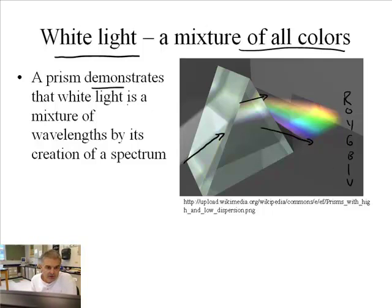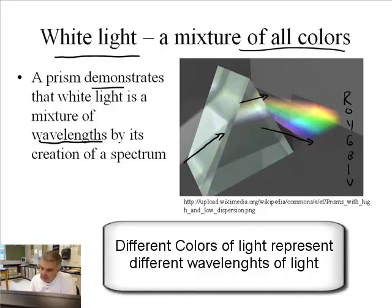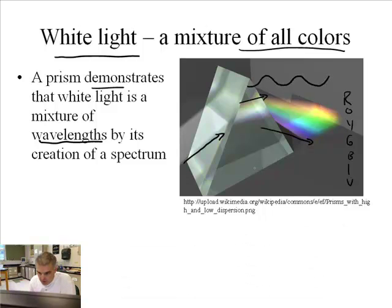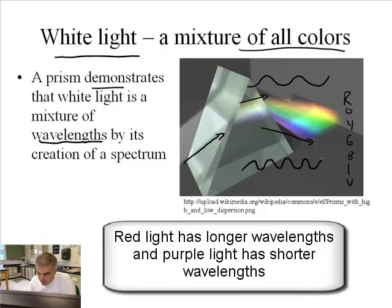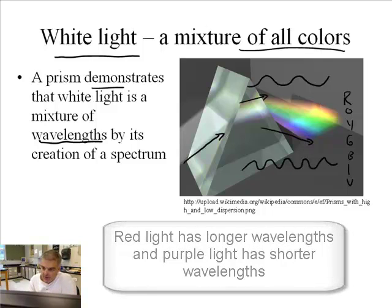So a prism demonstrates that white light is a mixture of the wavelengths. Now remember we learned last time that the difference between different colors of light is the different wavelengths. Red light, for example, would have a relatively long wavelength compared to violet light would have a shorter wavelength. All right, and that's called by the creation of the spectrum.